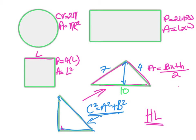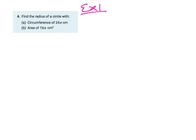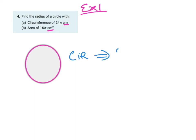We're going to look at more difficult questions using all of these properties. Example one: find the radius of a circle with a circumference of 24π and an area of 16π cm². First, I'd always try to visualize it, so I'm drawing a circle. The circumference is the distance around this circle.